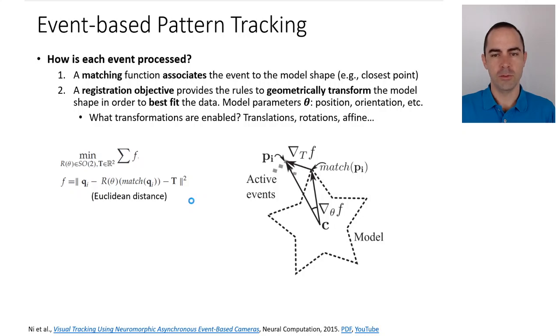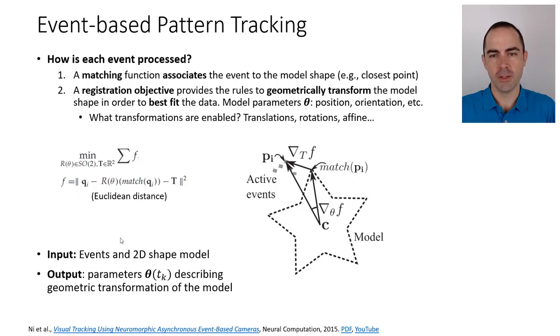To recap, this algorithm has as input the events, and the output are the parameters of the model, theta. As time progresses, the tracker receives as input the events and the additional information is the 2D shape of the model—in this case, the star. The output are the parameters of the model at times tk, the times of events, and this is basically a geometric transformation of the model in order to fit the data.